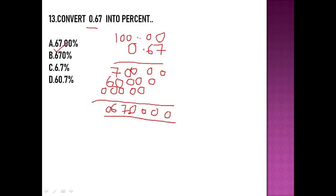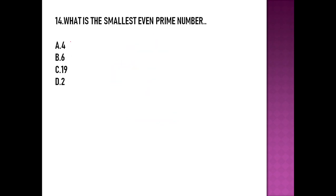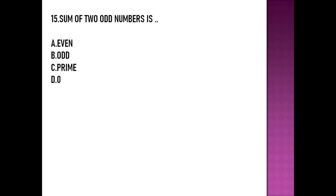Moving to question number 14: what is the smallest even prime number? The smallest even prime number is 2 — it is both even and prime. Option D is the right answer.